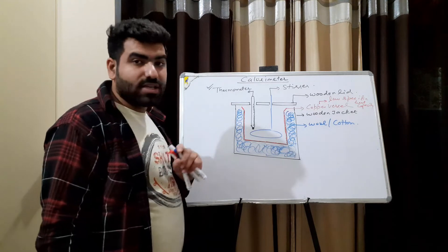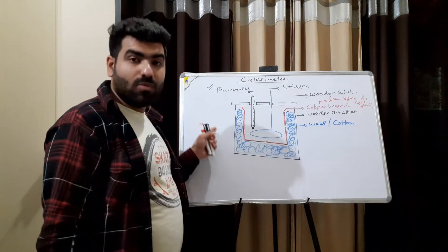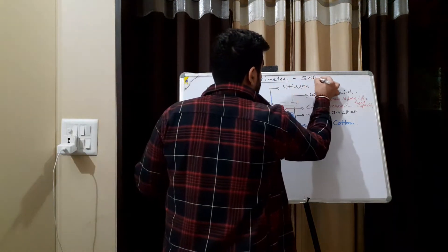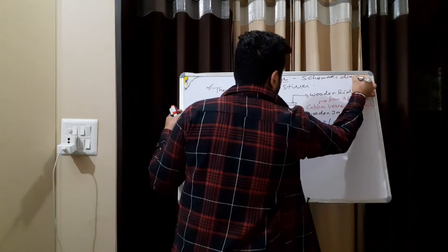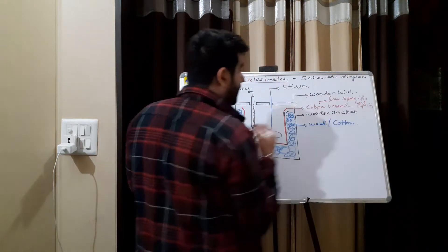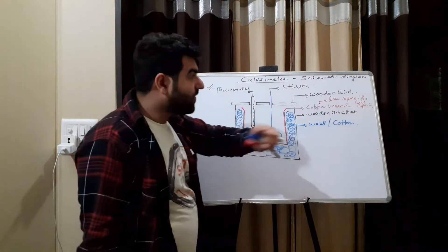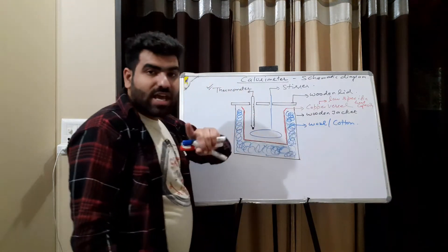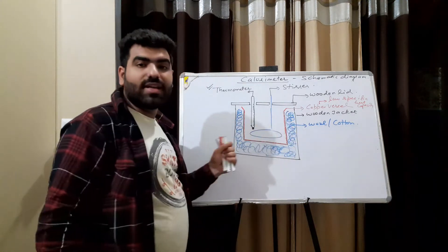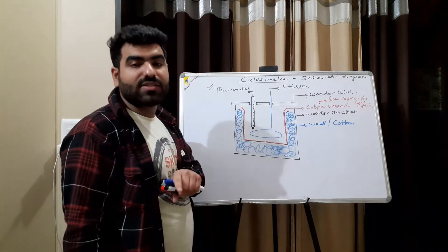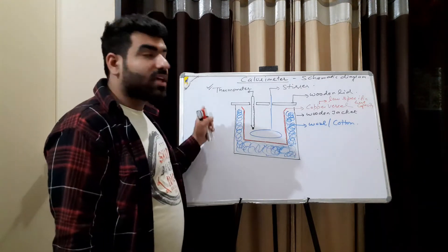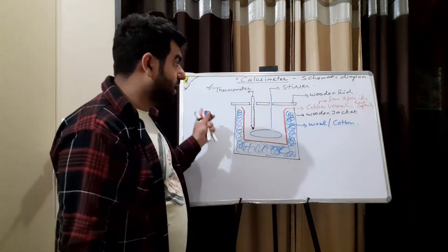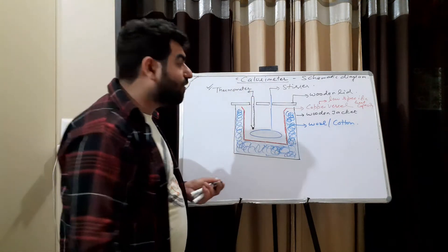So this is the schematic diagram of the calorimeter. It is made up of a copper vessel which has low specific heat. The wooden lid prevents any loss due to convection, the wool prevents any loss due to conduction, and the polishing on the inner and outer sides prevents any loss by radiation. Now let me also discuss the law of calorimetry within this video.